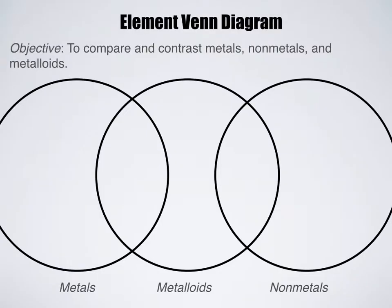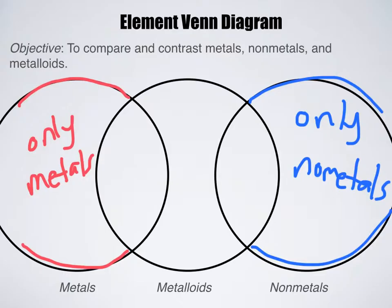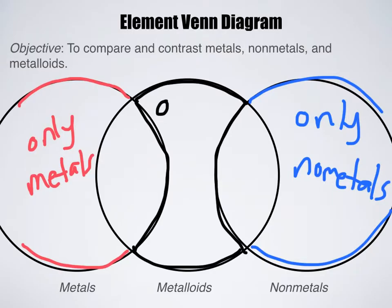So you have this Venn diagram in your notes, and I want you to fill it in. What we're doing is comparing and contrasting metals, non-metals, and metalloids. Over here on the left-hand side, I would like you to fill in the qualities that we talked about that only metals have. And then on the far right side, I want you to put down the qualities that only non-metals have.